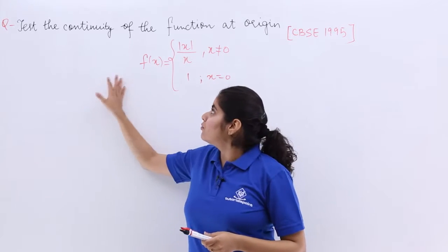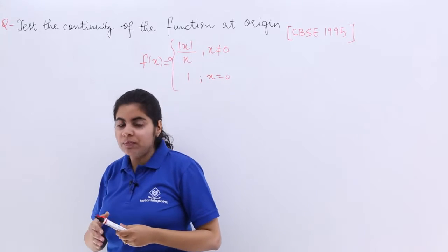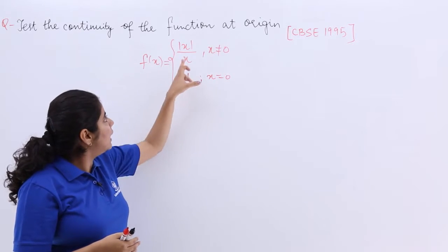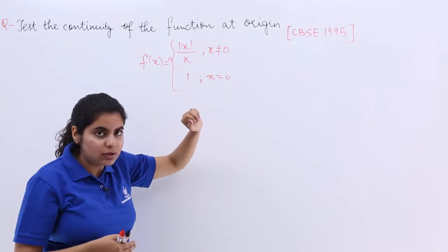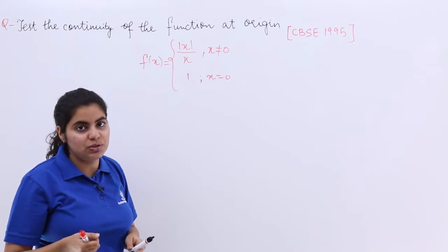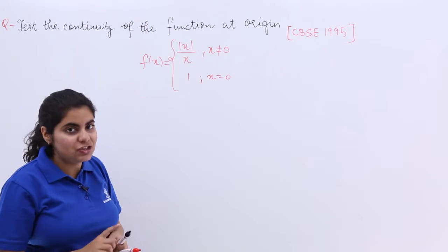The question is what? A function is given to me as f(x). The function f(x) is such that it is |x|/x when x is not equal to 0 and 1 when x is equal to 0. So let's start by checking it.